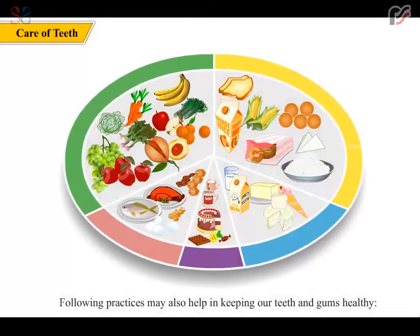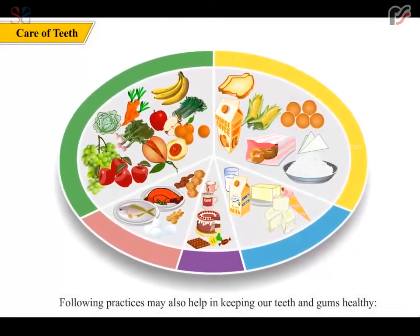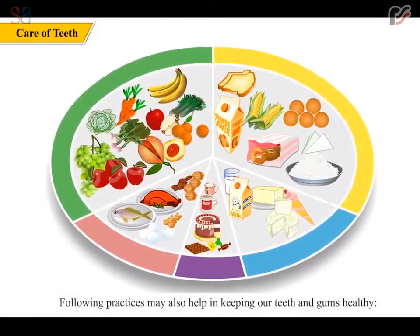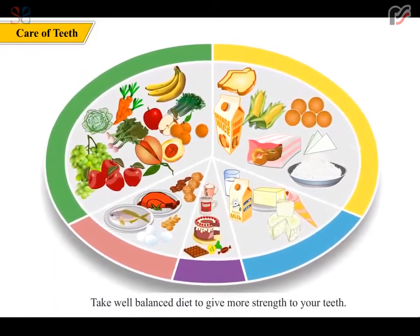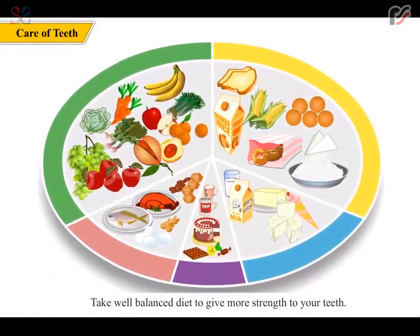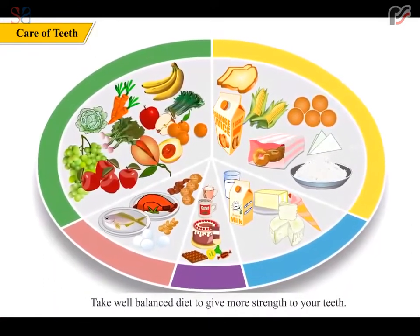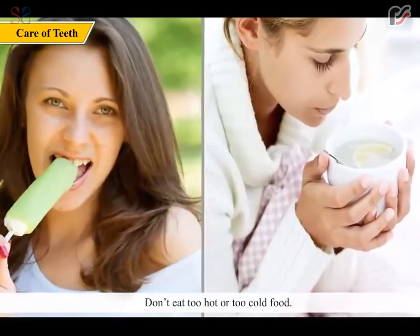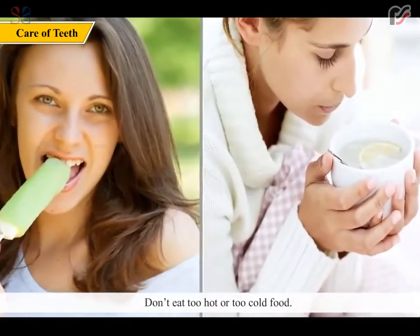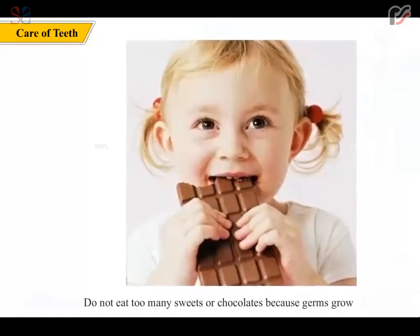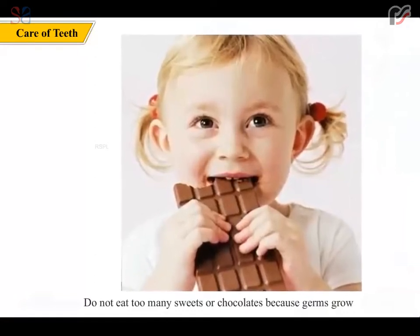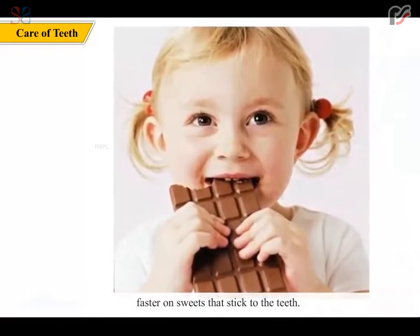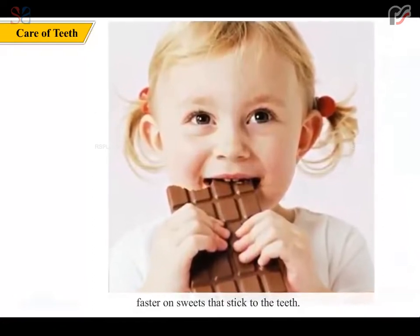Following practices may also help in keeping our teeth and gums healthy. Take a well-balanced diet to give more strength to your teeth. Don't eat too hot or too cold food. Don't eat too many sweets or chocolates because germs grow faster on sweets that stick to the teeth.